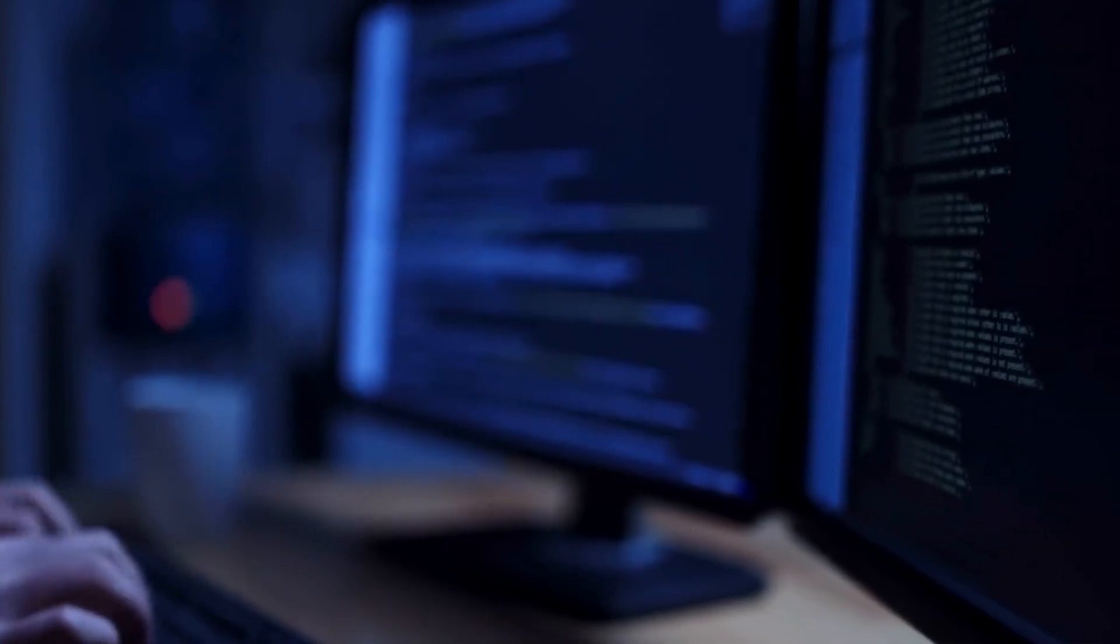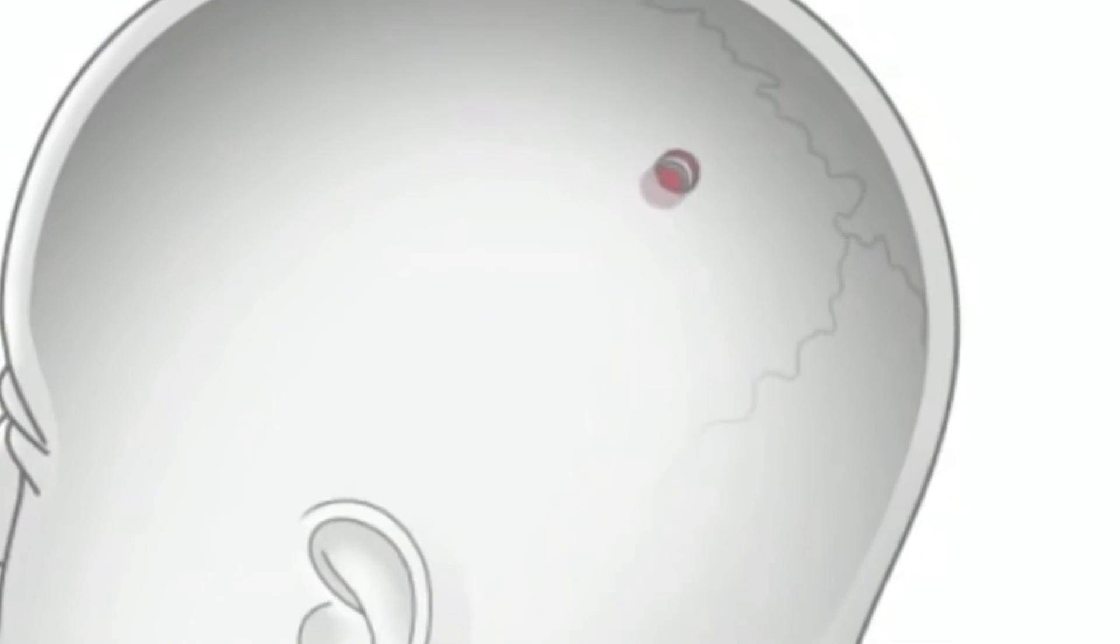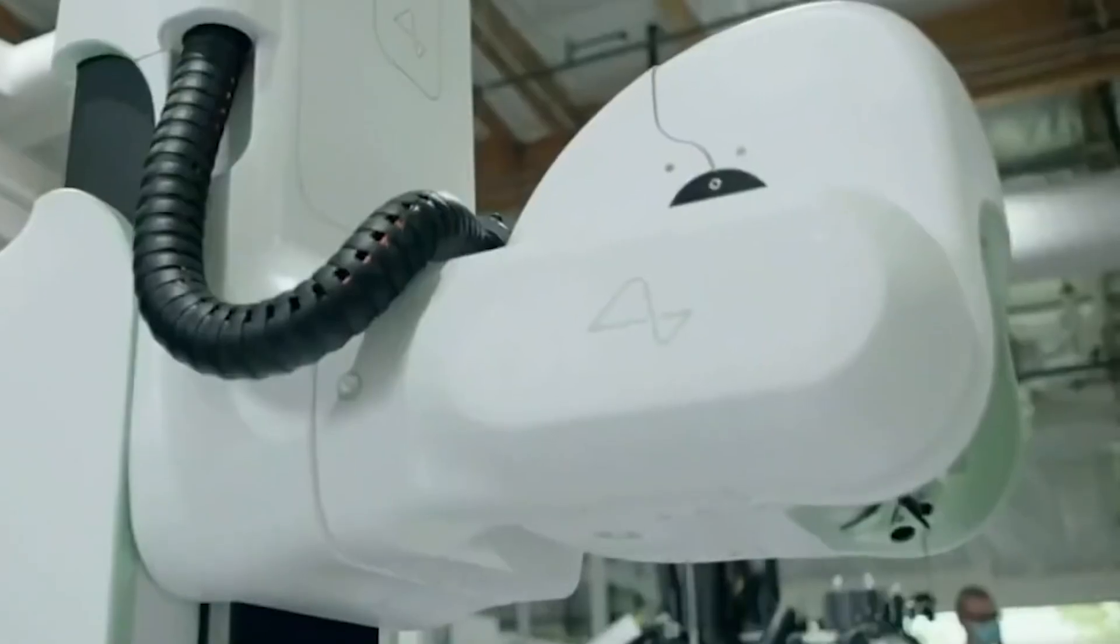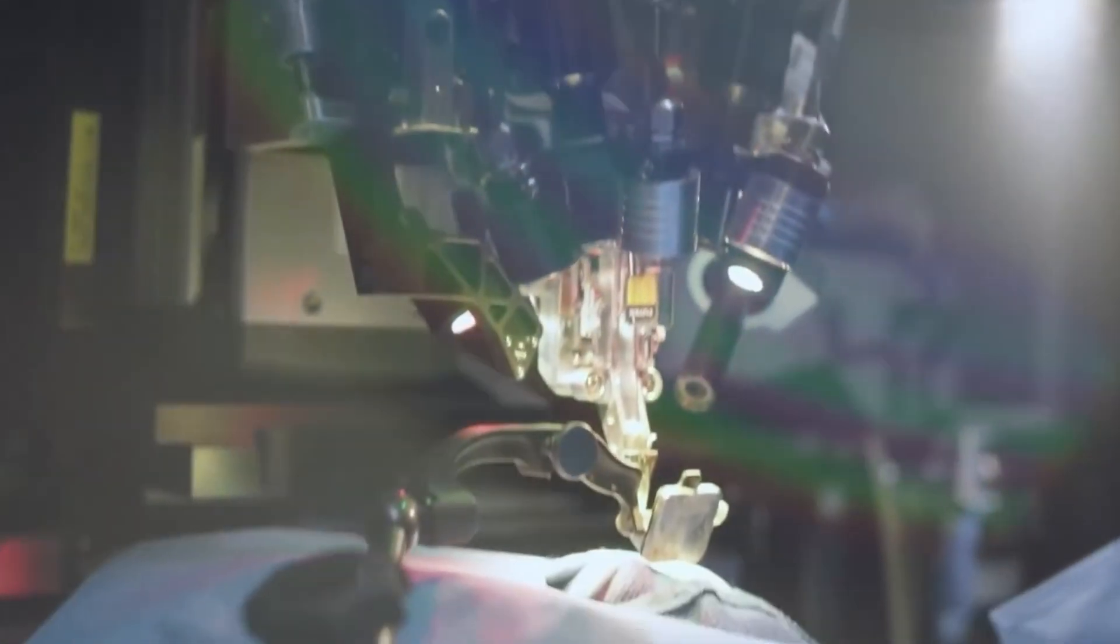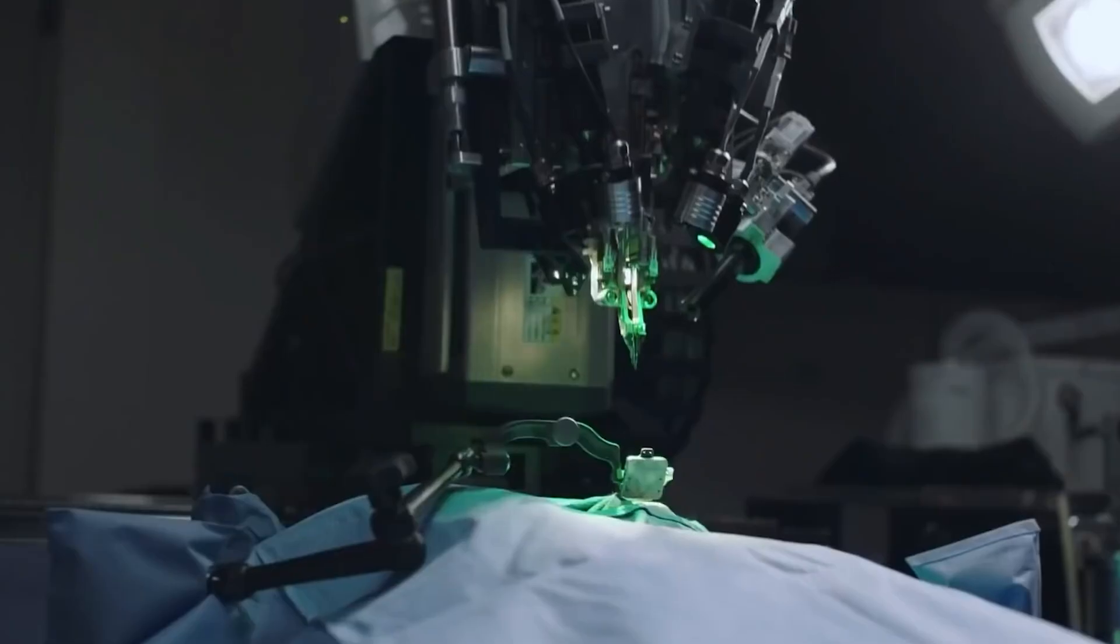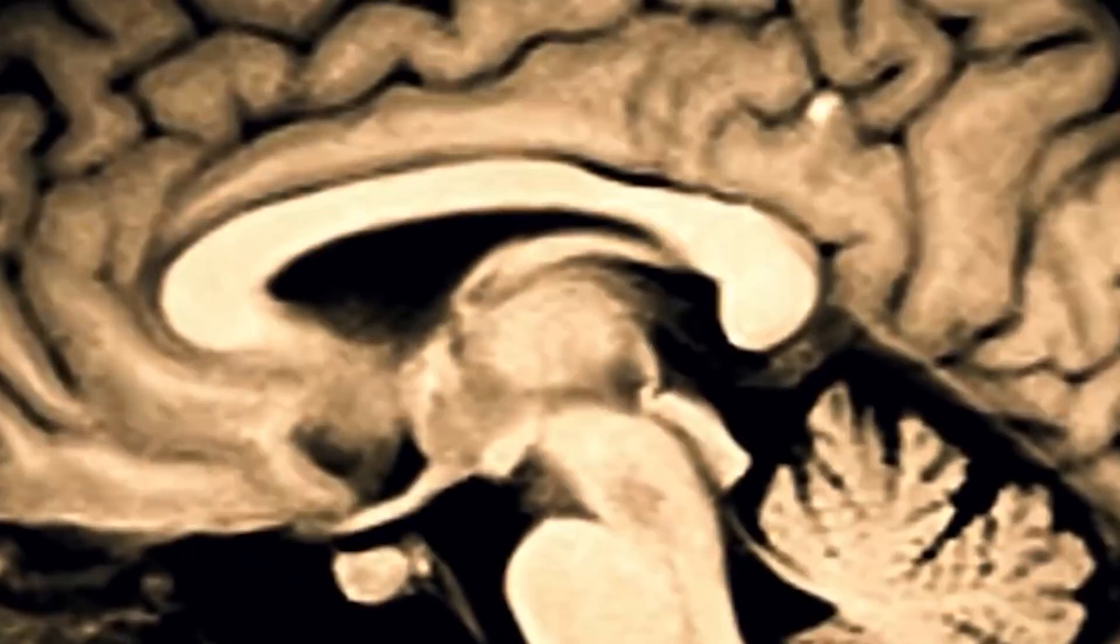However, owing to its flexibility, Neuralink's technology is more challenging to implant than the Utah Array. According to the white paper, the business has created a neurosurgery robot capable of inserting six threads every minute. It is like a hybrid between a microscope and a sewing machine in images. It also avoids blood vessels according to the findings, which could lead to a lower inflammatory response in the brain.